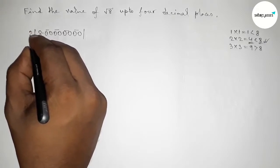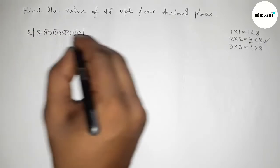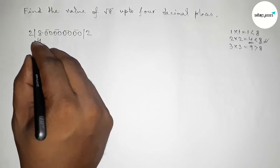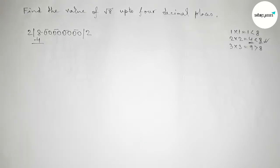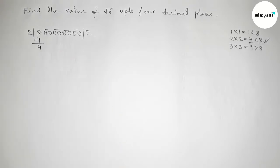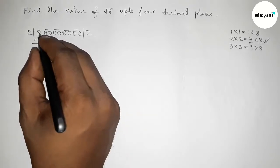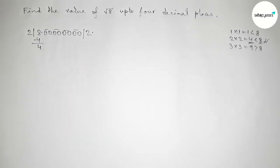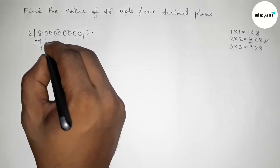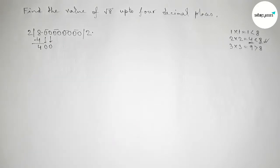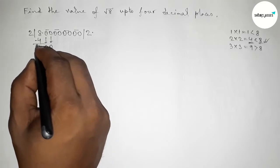Taking 2 here: 2 times 2 equals 4. Subtracting from 8 gives 4. Next, bring down the first pair of zeros, and draw the division line.